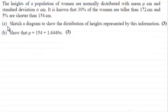In the first part we've got to sketch a diagram to show the distribution of heights represented by this information for three marks. And then in part B we need to show that the mean mu equals 154 plus 1.6449 times sigma for three marks.